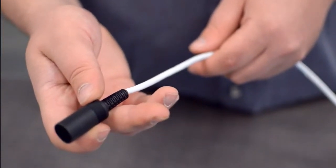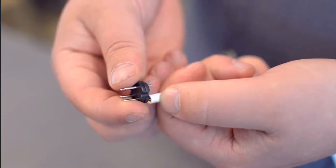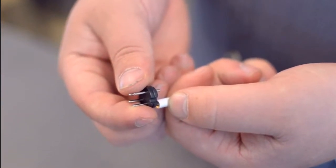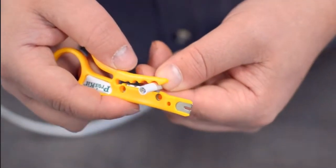Start by inserting the plastic boot over the jacket. Measure how far you need to strip back the jacket by holding the cable up against the base of the connector. Then strip the cable jacket using the wire strippers.